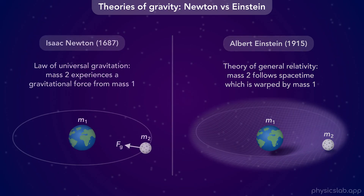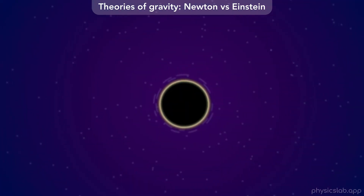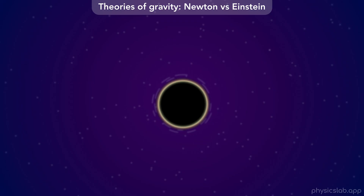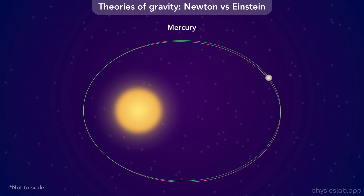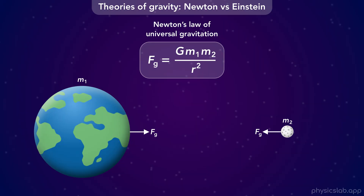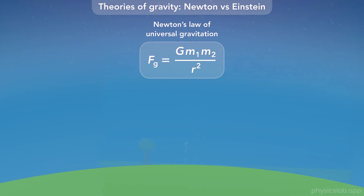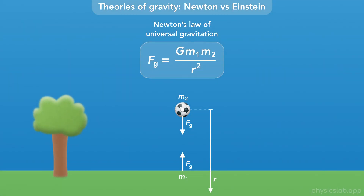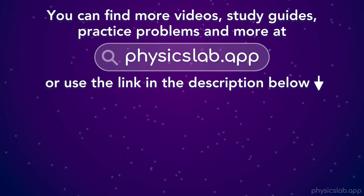But Einstein's theory is pretty complicated, and Newton's law is accurate enough for most situations, so we still use Newton's law today. There are only a few cases where we need to use Einstein's theory instead, like when we study massive objects like black holes, or if we need to accurately predict the orbit of Mercury—but the difference between Newton's prediction and Einstein's prediction is extremely small, about one one-hundredth of a degree per 100 years. For most things, Newton's equation for gravitational force is accurate enough. We used this equation to send astronauts to the moon, and we can definitely use it to study gravity on Earth. Alright, that's it for this video. Thanks for watching, and I'll see you in the next one.